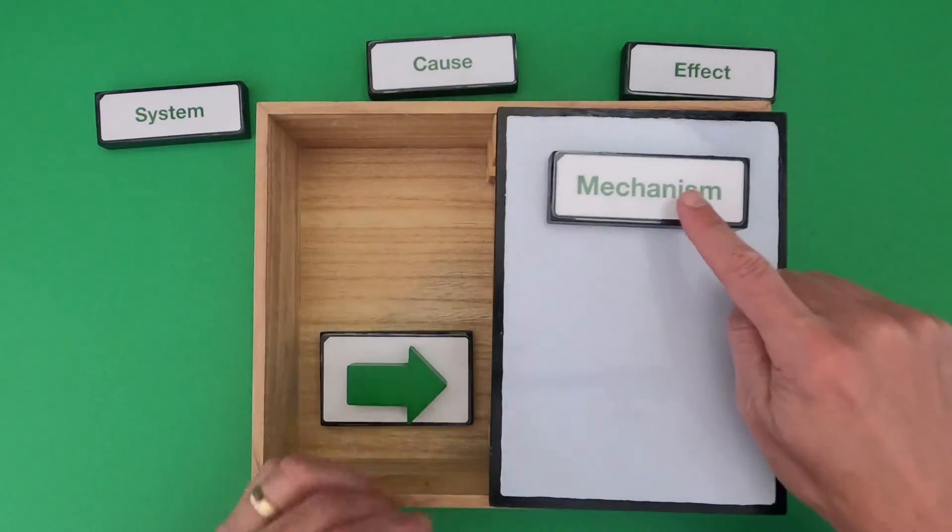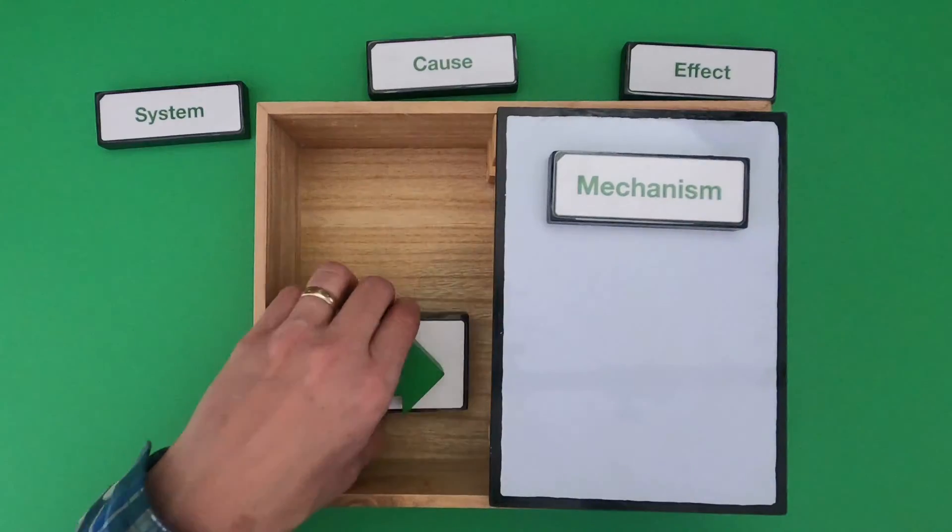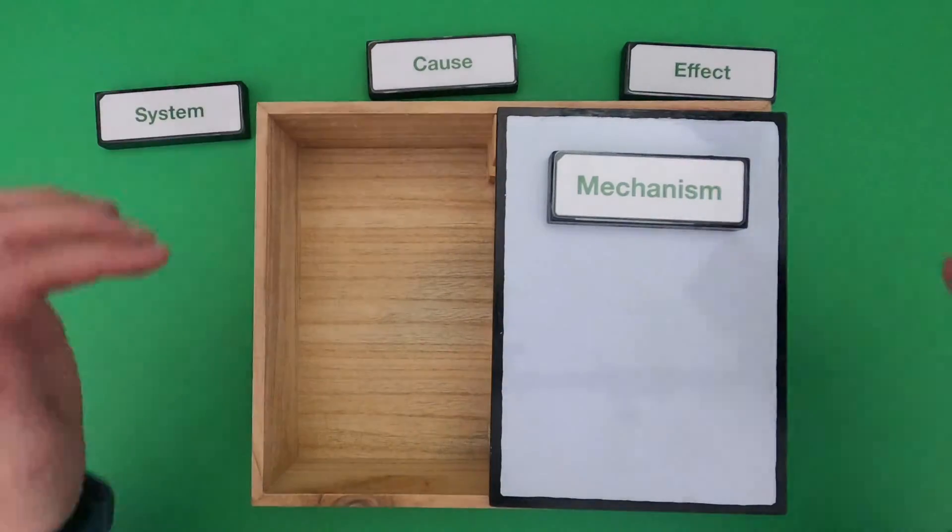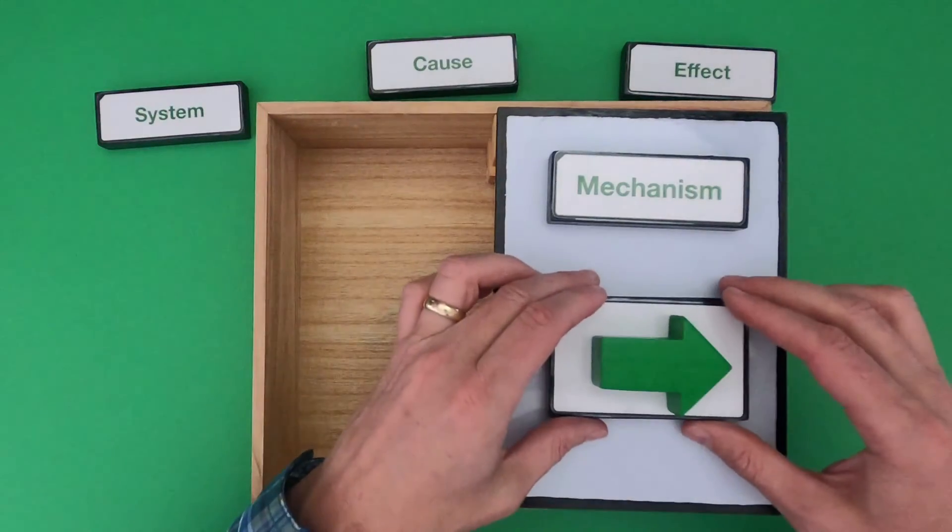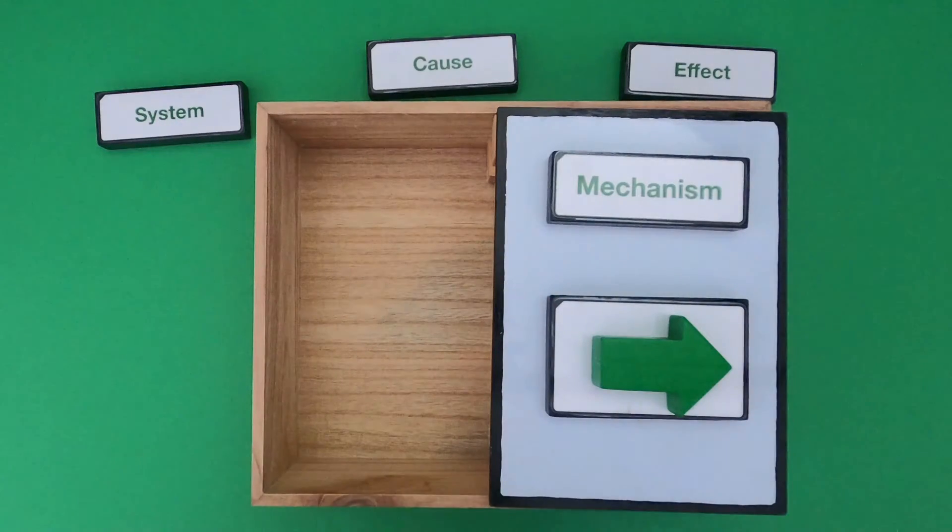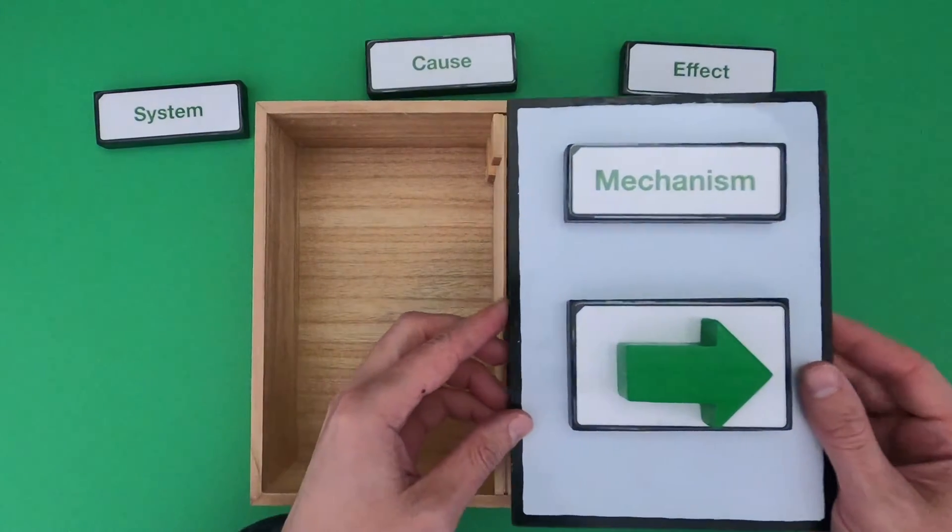In this video we're really going to dig into the mechanism because it's not always as simple as one cause, one effect. A lot of the time we're going from one cause through a series of relationships and we call that in science the mechanism.